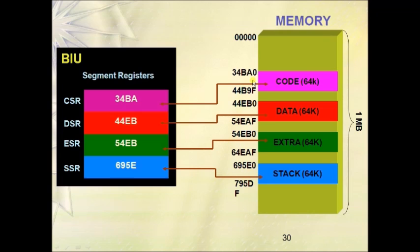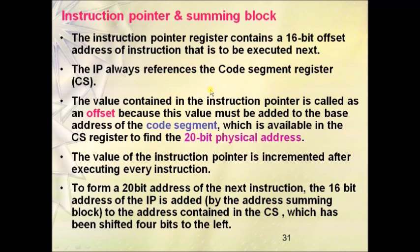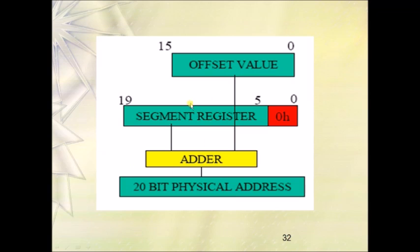The lower 16-bit address is held by pointer and index registers. The Instruction Pointer is a 16-bit register used for holding the offset address of the code segment. When IP is added with CS, we get the 20-bit physical address indicating the next instruction to be fetched. The segment register is shifted left by 4 bits by the address conversion mechanism adder inside the BIU, and then added with the offset register to produce the 20-bit physical address. For example, segment address 1000h shifted left by 4 bits has four zeros appended, then adding offset 29h gives physical address 10029h.